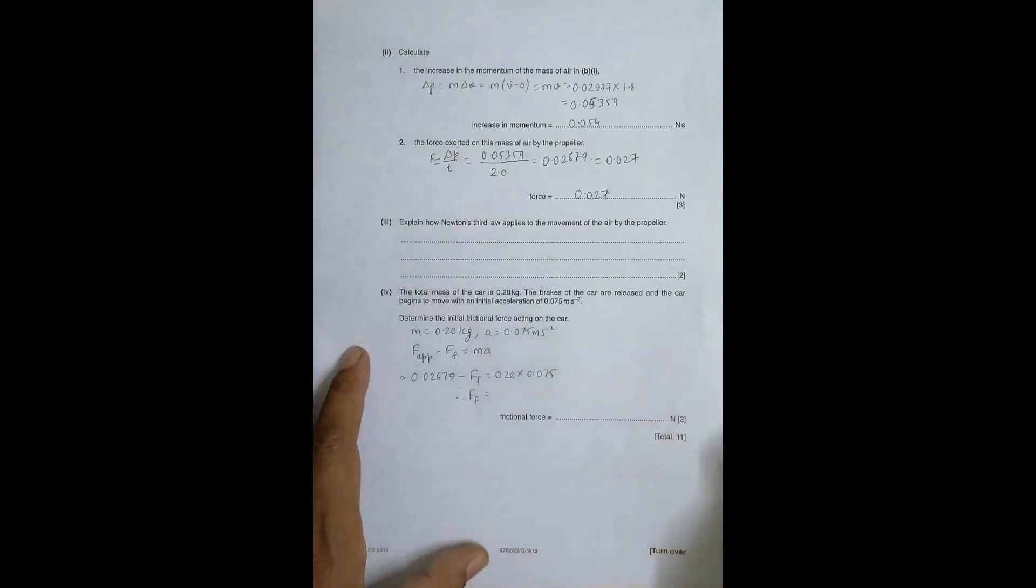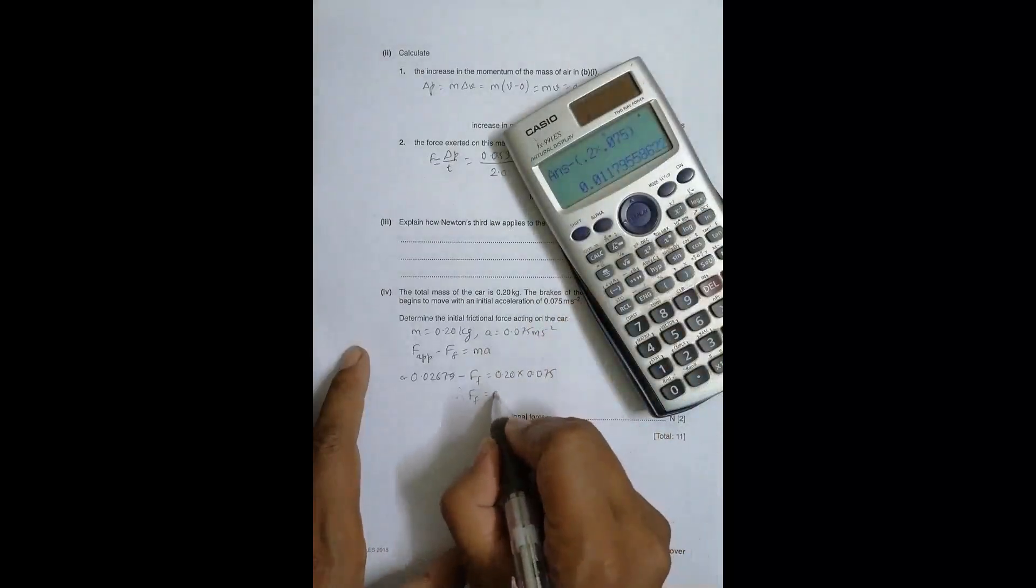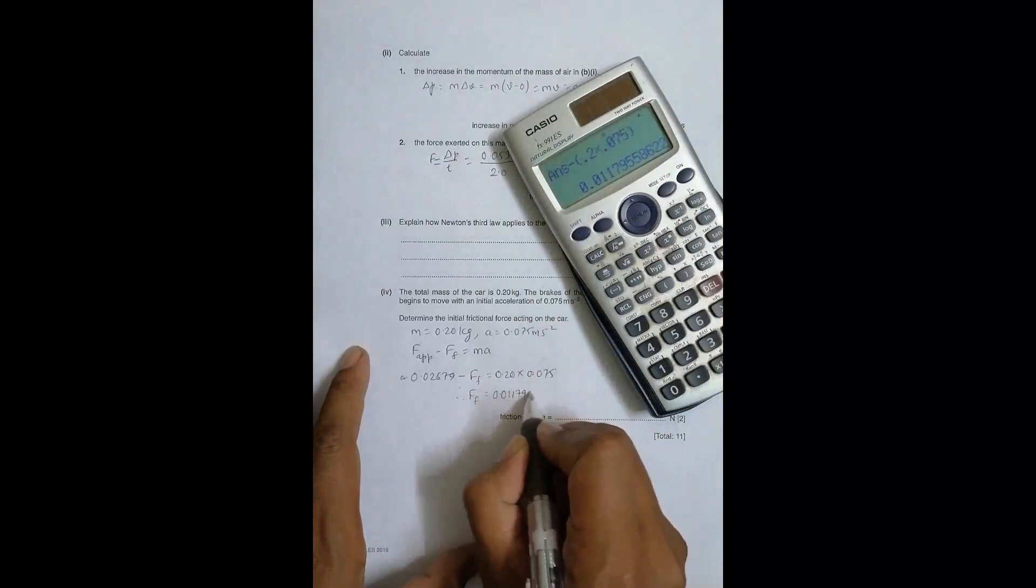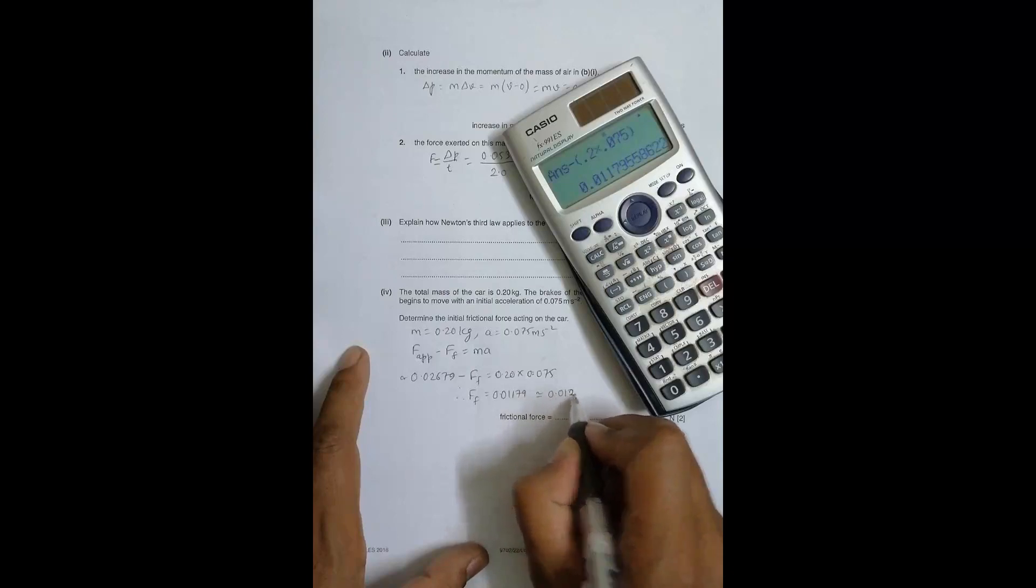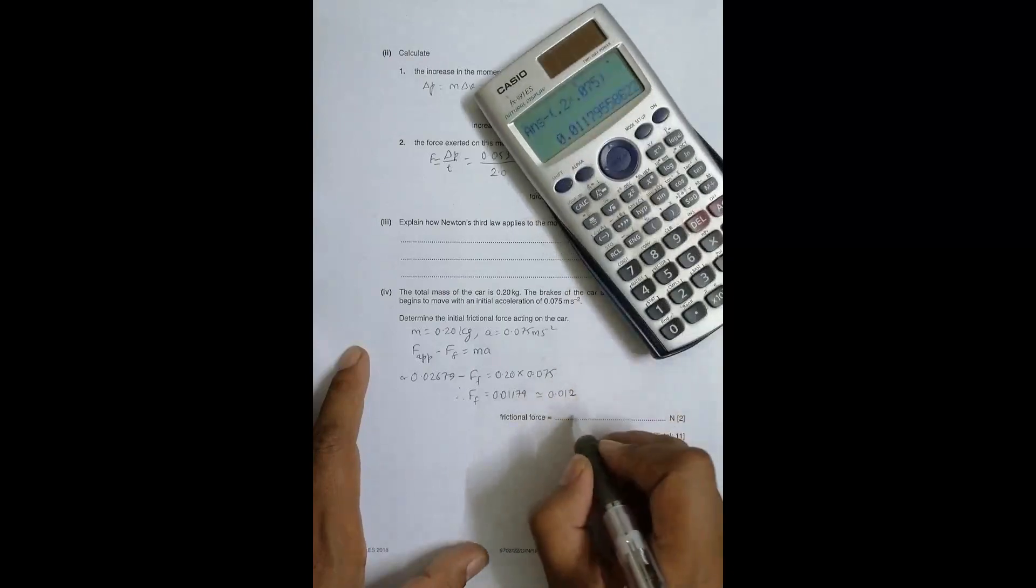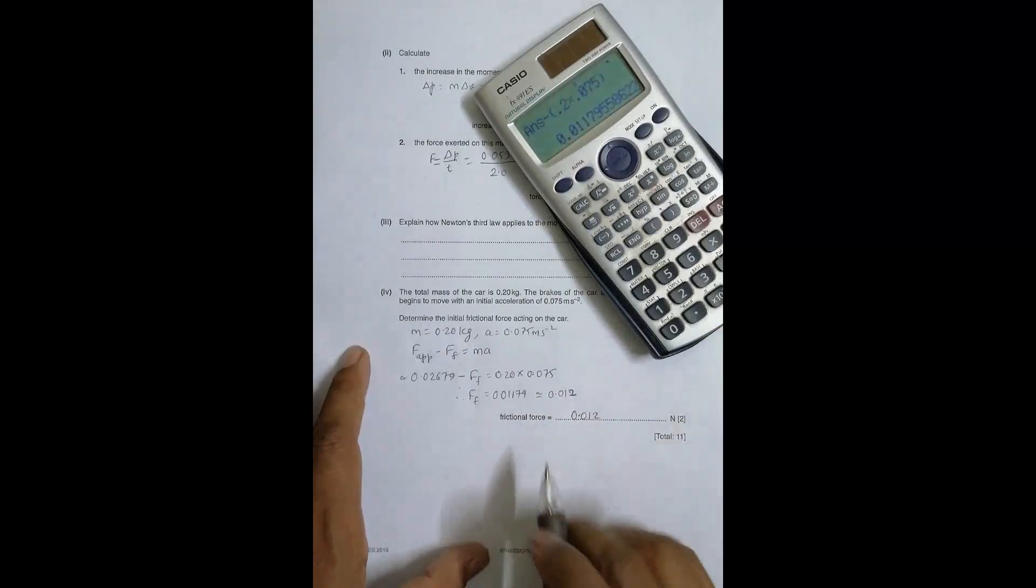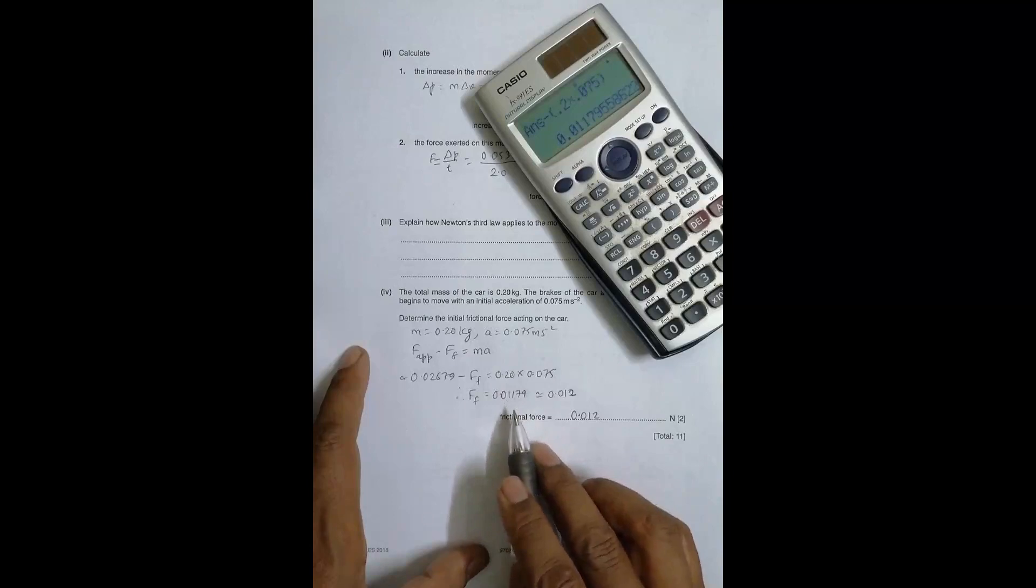Therefore the friction force will be equal to 0.01179 and so on. In 2 significant figures it will be equal to 0.012. If in 3 significant figures it will be equal to 0.0118. So that will be the answer to this question.